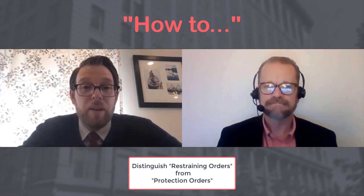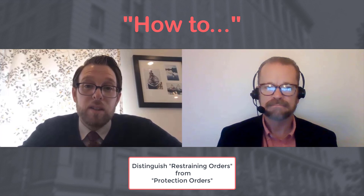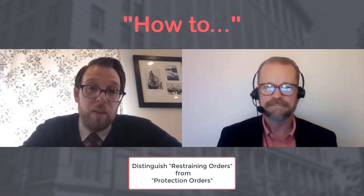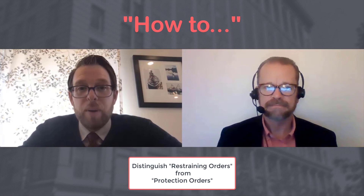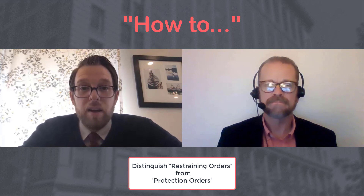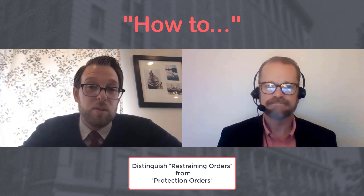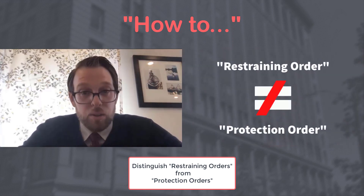In a family law case, it's very common that there are mutual restraints that limit either person's ability to do things. In some counties, like Snohomish County just north of us, when a divorce action or something involving a parenting plan is filed, there's an immediate restraining order that goes in automatically — laying out mutual ground rules about not selling assets, not taking the kids out of state, and similar things while the case is going on. Those are all examples of restraining orders, but they're not protection orders.